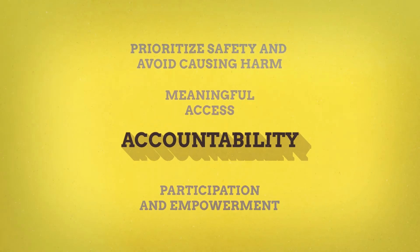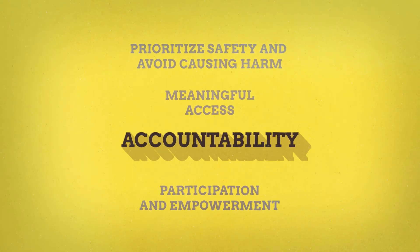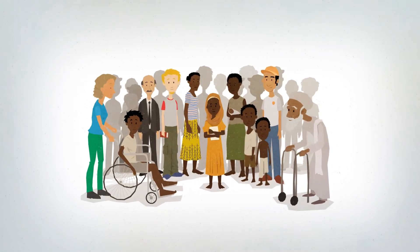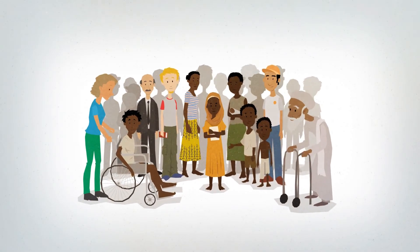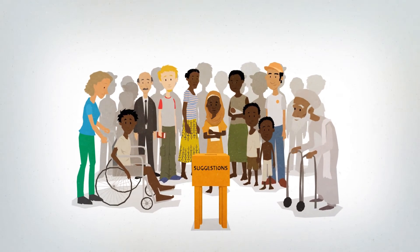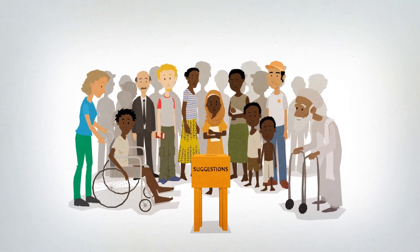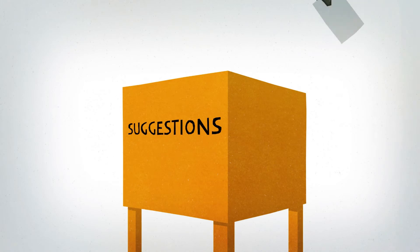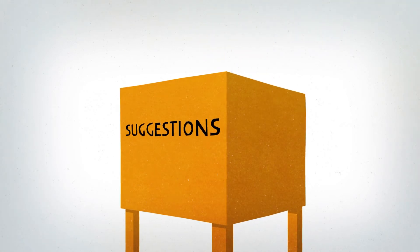Accountability. This is about maximising transparency, ensuring feedback and complaint mechanisms are in place, accessible and promote inclusive participation. Different members of the community can be affected in different ways. Consulting with a wide range of groups can help the most vulnerable and marginalised populations engage in the program.